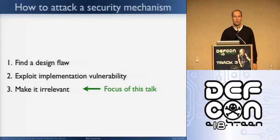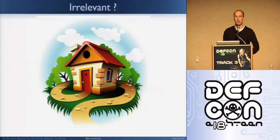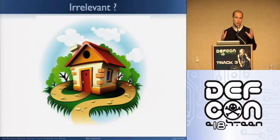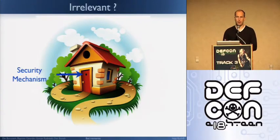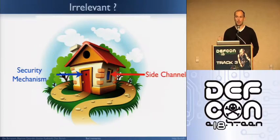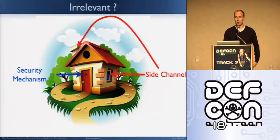So what do we mean by irrelevant? Bear with me for a second. Let's assume you have a nice house in Wonderland and you want to prevent people from breaking through it. The way you do that is you have a security mechanism which is a door — the bigger the door, the more secure you are. But the clever attacker might try what we call a side channel: break through the windows or the roof. That's what we call side channel.